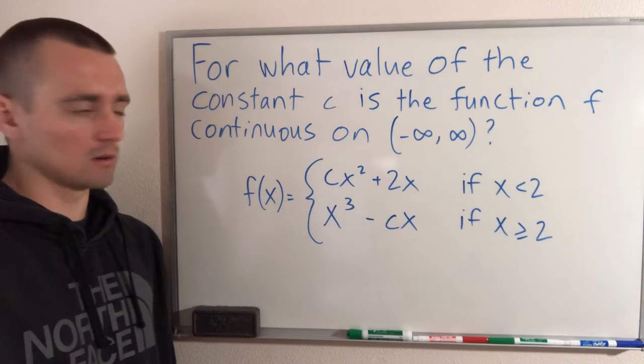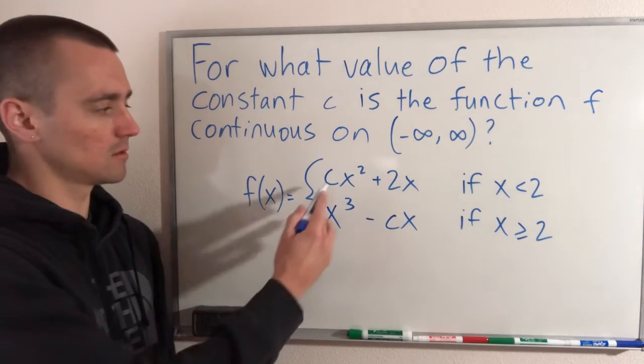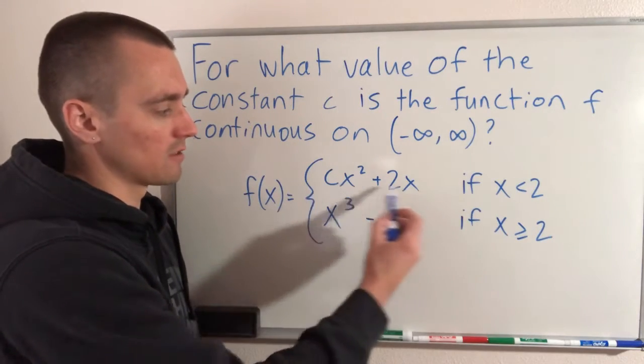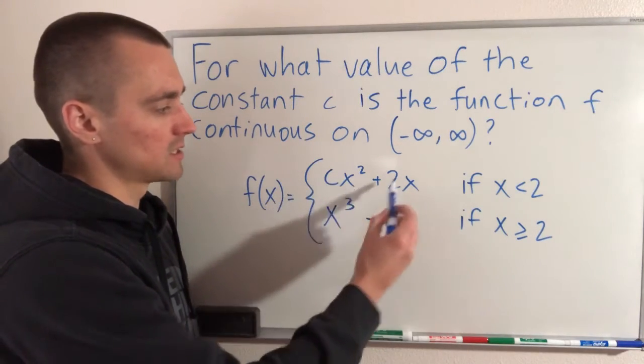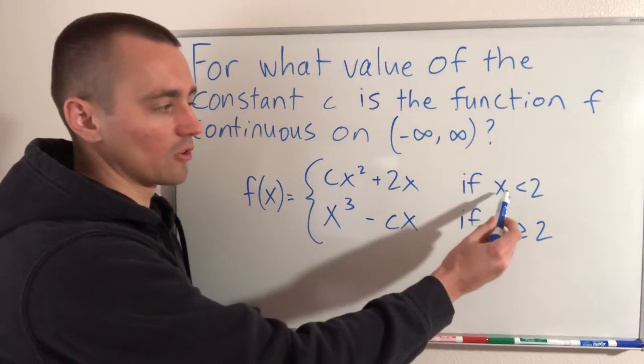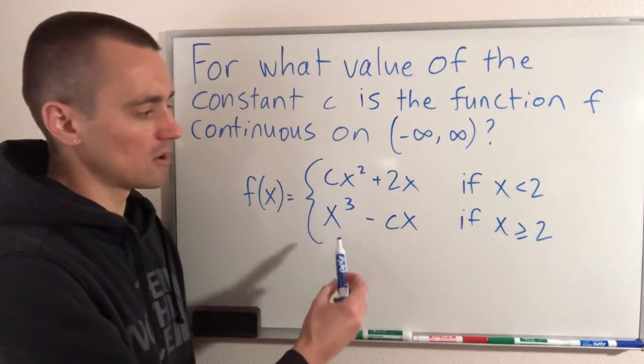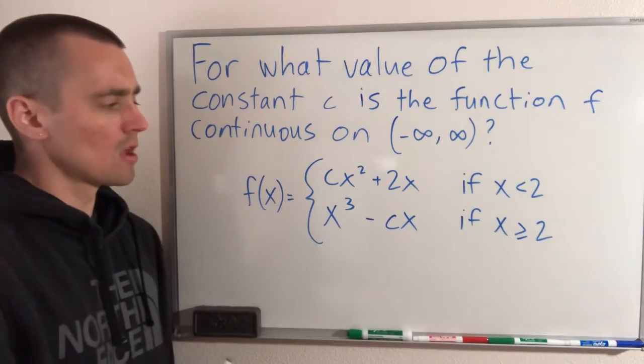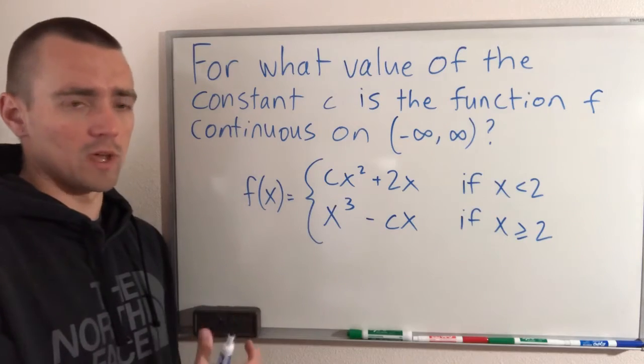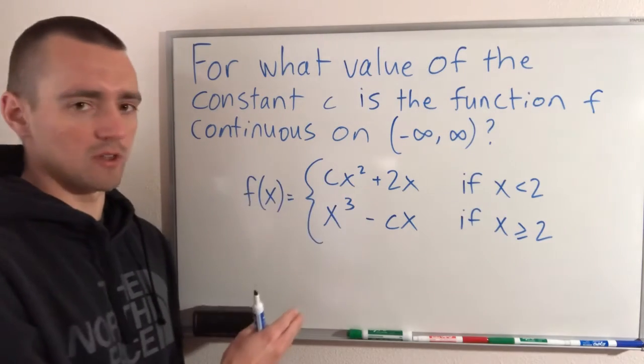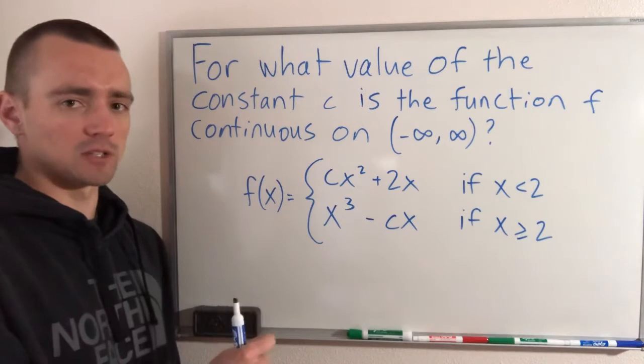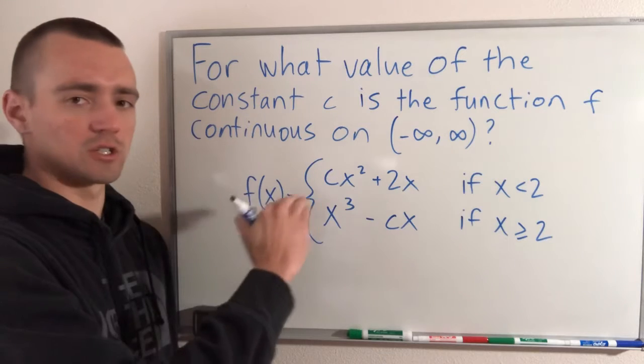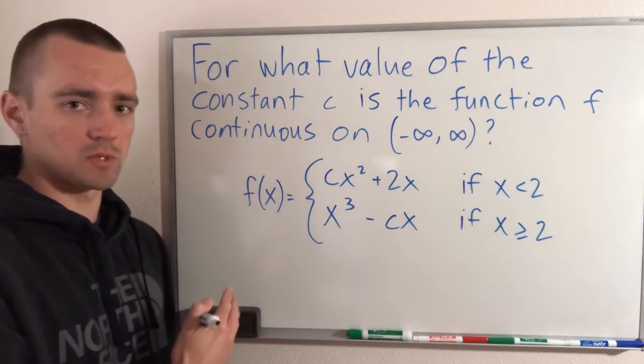Polynomials are continuous everywhere, no matter what this constant would be. So what that means is we already know, based on the fact that these are both polynomials, that this function is already continuous for all x less than 2, and this function is already continuous for all x's bigger than 2. All we need to do is make sure that they line up when we go from one function to the other. So when we get to x equals 2, we need to make sure that they're at the same height so that we smoothly go from one function to the other without having a jump discontinuity.